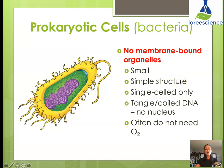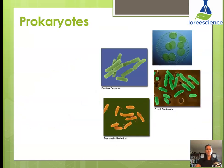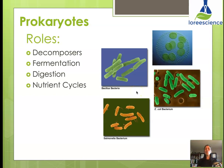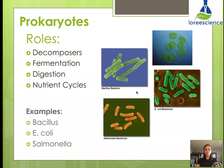Prokaryotic cells often don't need oxygen because oxygen is typically used by the mitochondria, which is a membrane-bound organelle. With no mitochondria, they get energy in other ways — from thermal sources like heat or sulfur springs. They are always single-celled and play many roles: decomposing matter, fermentation such as in cheese and yogurt, aiding digestion, and participating in nutrient cycles like the nitrogen and carbon cycles. Common examples include Bacillus, E. coli, and Salmonella. Not all bacteria are bad — but all bacteria are prokaryotes.